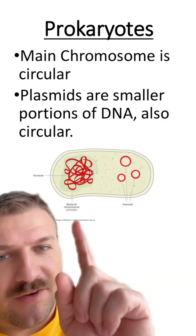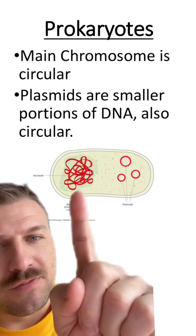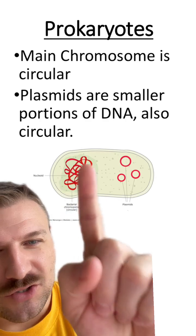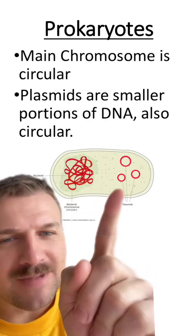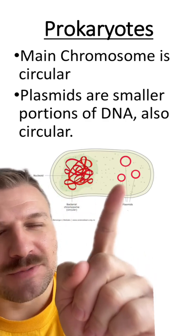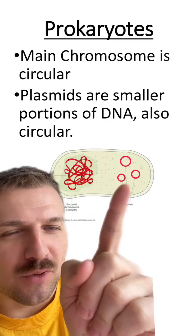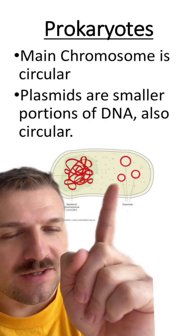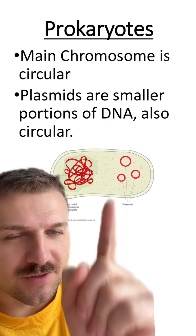Typically in prokaryotes, we find one main chromosome that is a circle — it kind of looks all jumbled up — as well as plasmids, which are just smaller portions of DNA that are also in the form of circles.